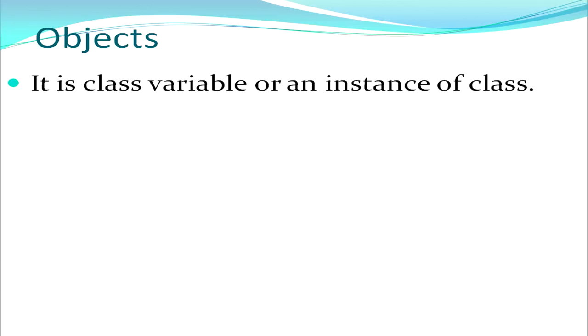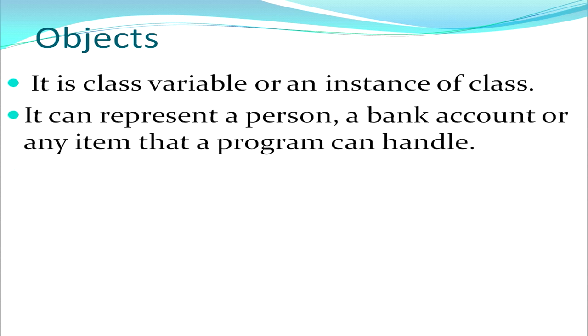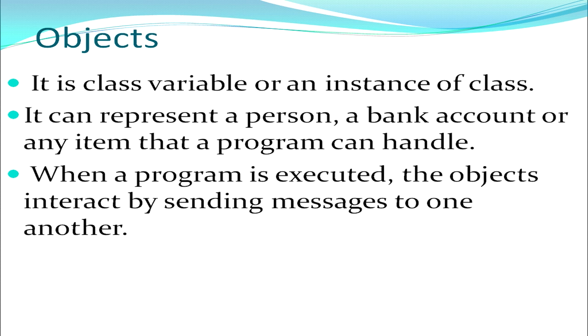First we will talk about objects. An object is a class variable — an instance of a class. It can represent a person, a bank account, an item, or anything that a program is supposed to handle or maintain records of. When a program is executed, objects interact by sending messages to one another using functions defined in the classes. When I create an object as an instance of a class, those functions are automatically available for the object to use.